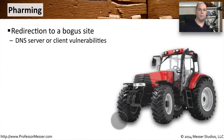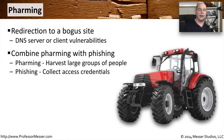We call this redirection to a bogus site pharming — spelled with a PH. This means we were able to take advantage of a vulnerability in a client or a DNS server to redirect that traffic wherever we'd like it to go. Usually the bad guys combine this pharming function with phishing. They'll send people to a site, and the users think they're going to PayPal and entering their credentials, but they're actually putting their credentials into the bad guy's server. It's all a combination of redirecting the user and presenting them with something that looks familiar but really is not.